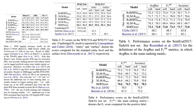Compared to the extremely large RoBERTa Large and XLM Large, BERTweet underperforms on POS tagging and NER scores, but outperforms on text classification datasets.